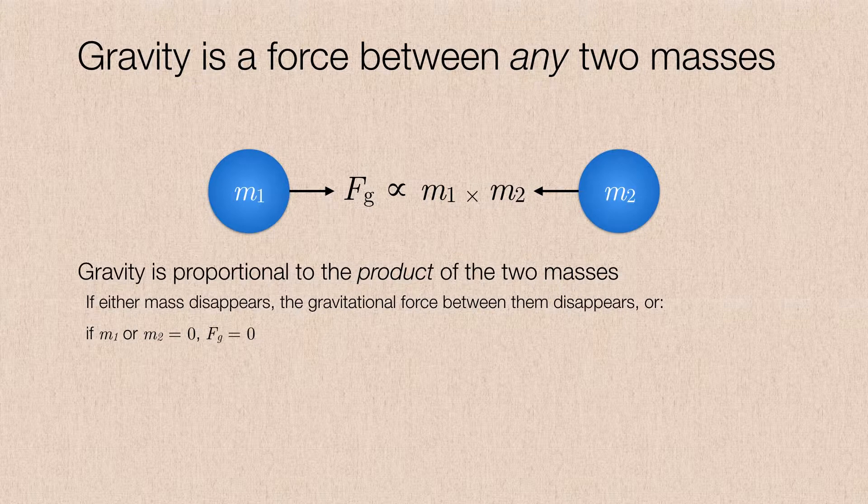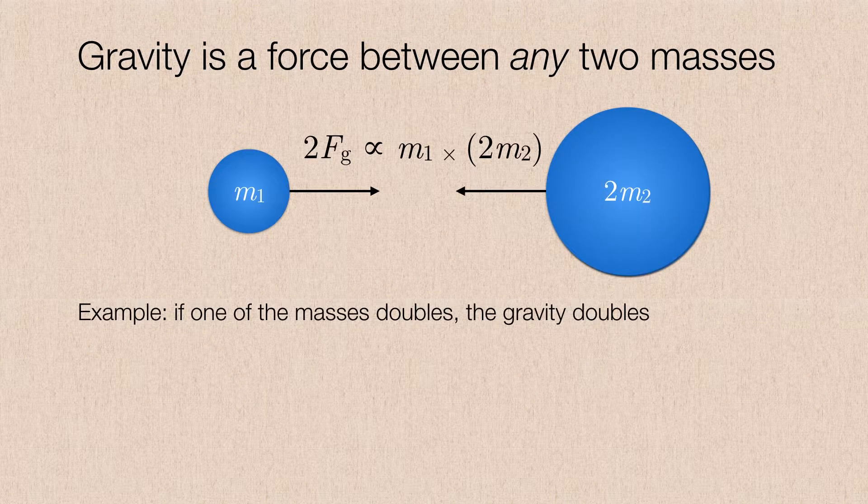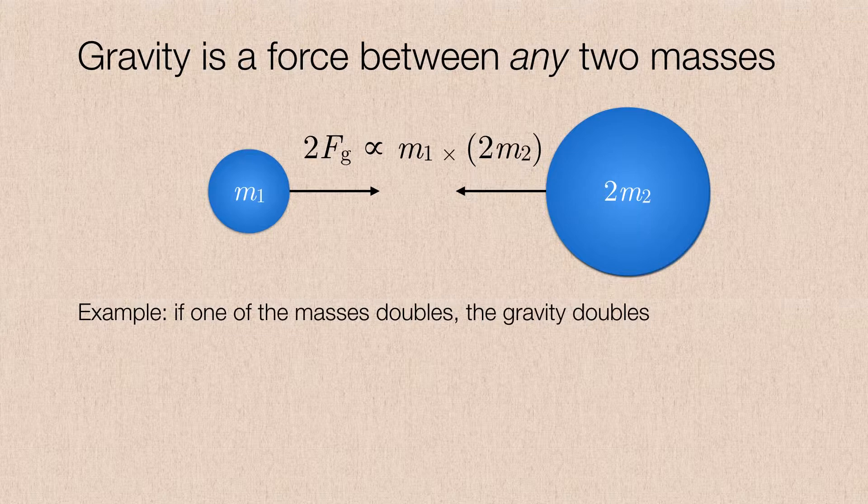Likewise, if we were to increase just one of these two masses, let's say we were to double the mass of the second object, then the gravitational force between them doubles. You notice that the gravitational force that the second mass has on the first is doubled, but the gravitational force that the first mass has on the second is also doubled, even though it does not change its mass.